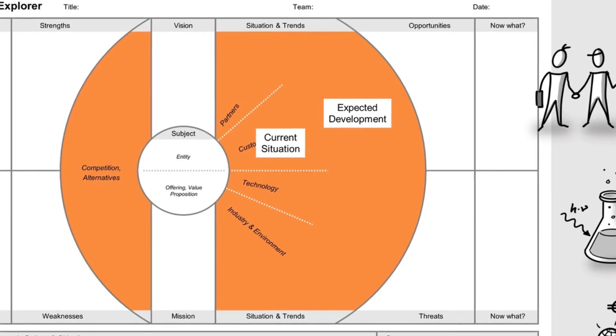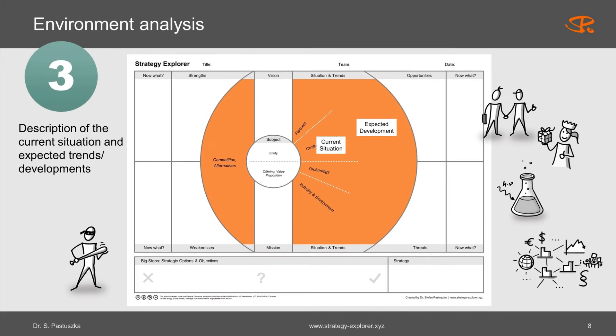This will help you construct logical chains for the next step, the SWOT analysis. Creating visual chains of argumentation is one of the major features of the Strategy Explorer method. How that works exactly, I will show you in the next episode of the video tutorial. In the meantime, let's have a look at the environment analysis for EcoMeet, our example from the previous sessions.